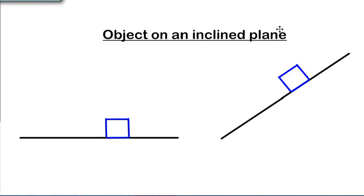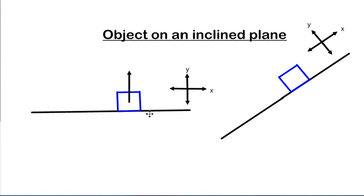Assalamu alaikum warahmatullahi wabarakatuh. Today we'll be looking at objects on an inclined plane. We see that we had an object on a flat surface that we have the x and y direction that is according to the normal Cartesian plane.